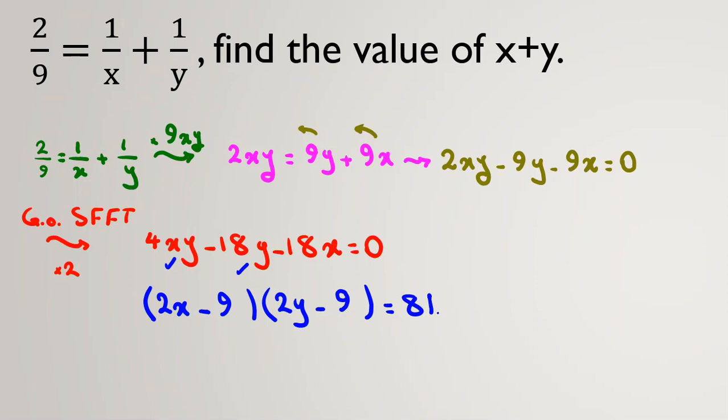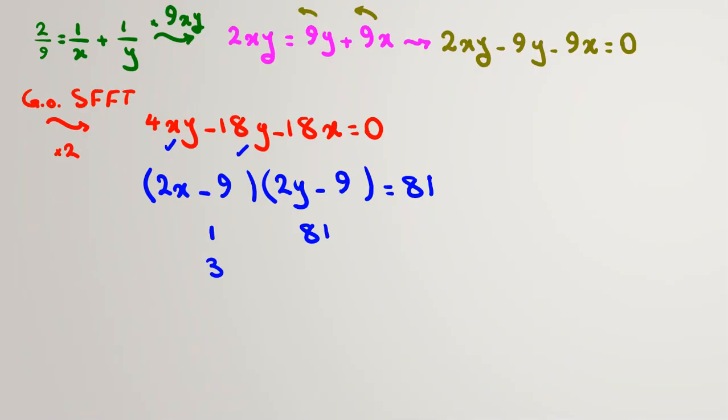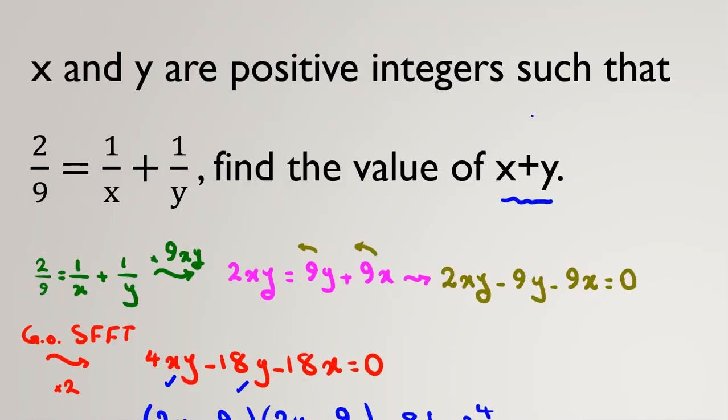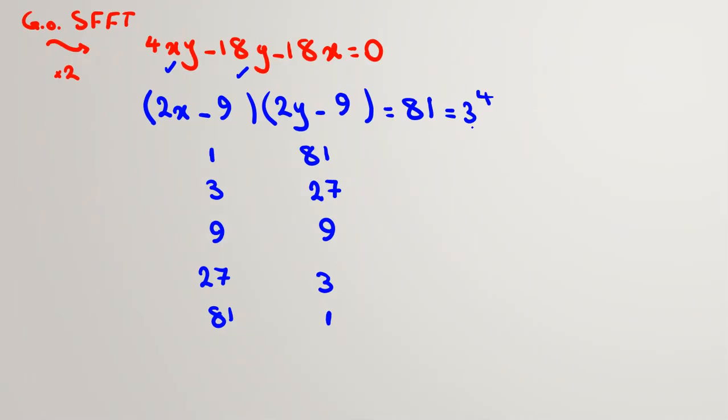So what are the possible cases? It can be 1, it can be 81. It can be 3, because 81 is 3 to the 4th. So we can have 3, 3 cubed which is 27, 9 and 9. Other case: 27, 3, and 81, 1.